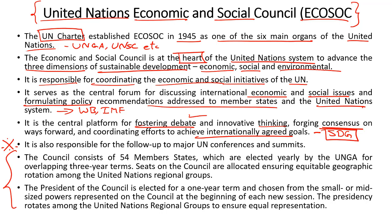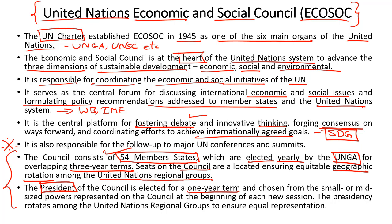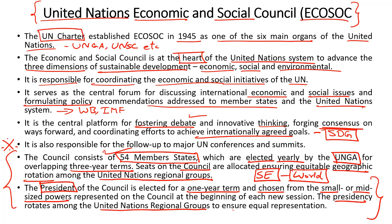The composition of ECOSOC is important for prelims. The ECOSOC is made up of 54 member states of the UN, elected on a yearly basis by the UN General Assembly. Members enjoy a three-year term and seats are allocated on the basis of a geographical quota to ensure fair representation for all countries across the various UN regional groups. The president of ECOSOC is elected for a one-year term, and by convention is always chosen from small or mid-sized countries to give a greater voice to smaller powers. The presidency also rotates among UN regional groups to ensure equal and fair representation.